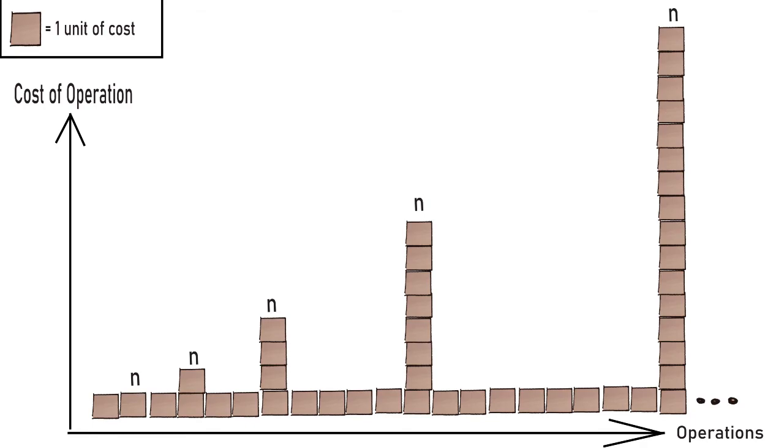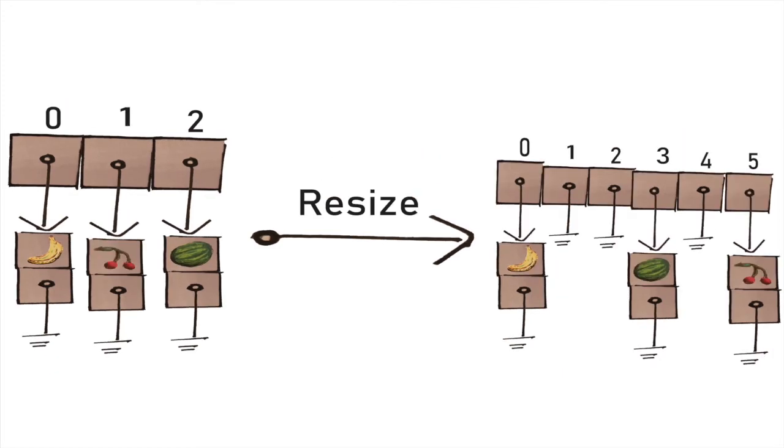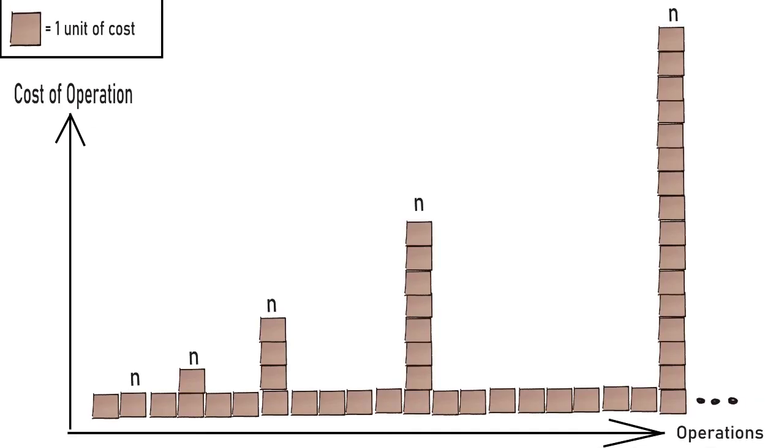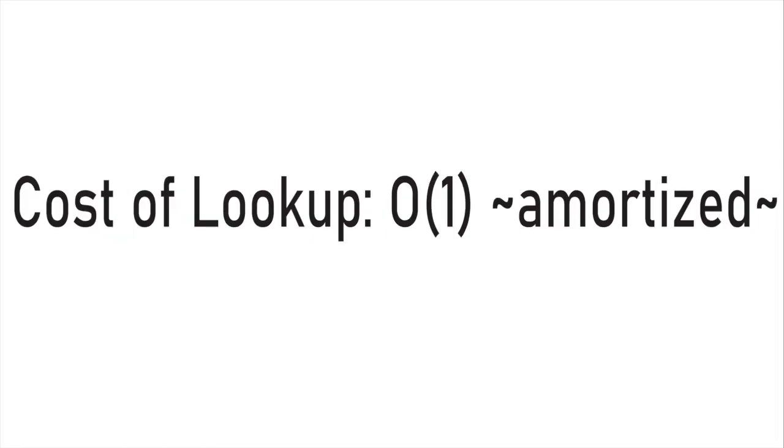Remember, we can use amortized analysis when we have mostly cheap operations and sporadic expensive operations. Here, the cheap operations are adding fruit to the hash table, and the expensive operation will be resizing the hash table. While an individual insertion may be very expensive, a sequence of insertions is guaranteed to be cheap. That means the cost of inserting an element isn't just average case O(1), but average case O(1) amortized.